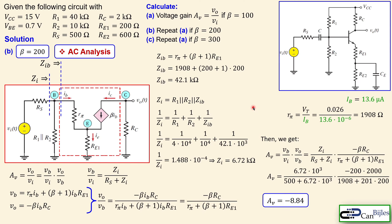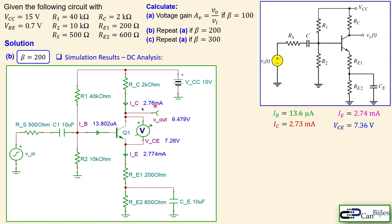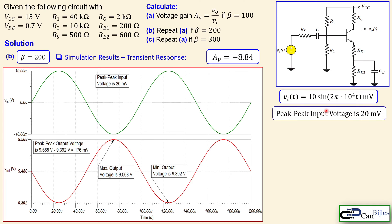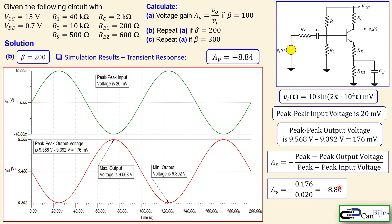Going from beta equals 100 to 200, the gain has changed only very slightly — that is the effect of the partial bypass capacitor. The emitter resistor is not bypassed completely, so you trade away some gain but gain stability. The SPICE DC results for beta equals 200 confirm our calculations, and the transient simulation shows an output of 176 mV, giving a measured gain of minus 8.80, very close to the calculated minus 8.84.